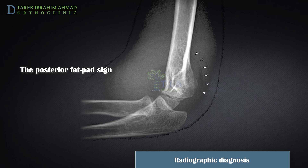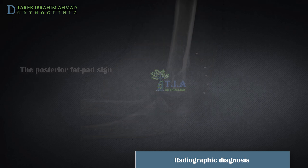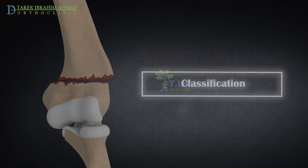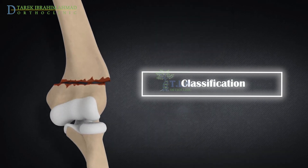The posterior fat pad sign can also be evaluated on the radiograph — it appears as a lucency on a lateral view along the posterior distal humerus, suggestive of an occult non-displaced fracture of the elbow. In most children the fracture line is clearly seen, but in very young children the bones may not be sufficiently hardened to show up well on an X-ray. The doctor may also request an X-ray of the uninjured arm for comparison.